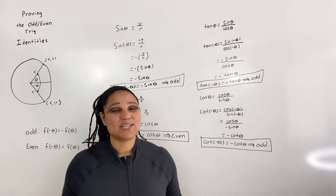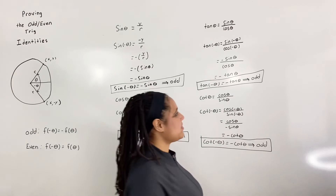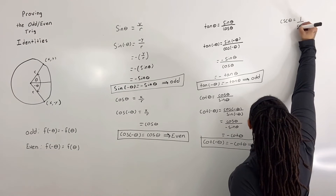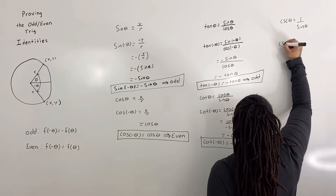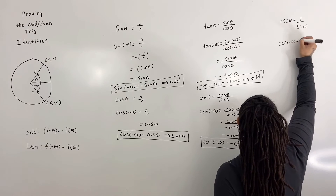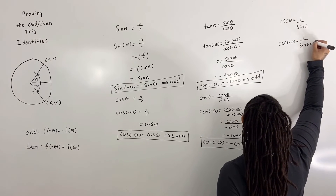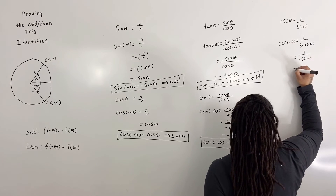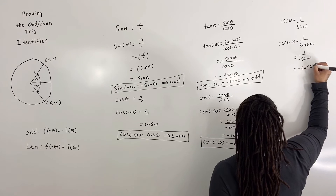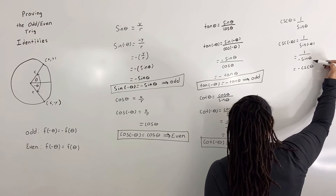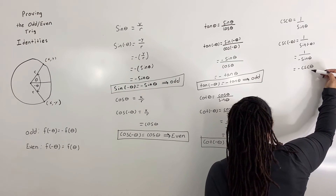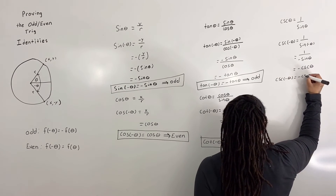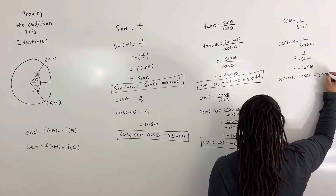Now let us prove that cosecant is an odd function. We know that csc of theta is equal to 1 over sine of theta. So csc of negative theta is equal to 1 over sine of negative theta. But that is just equal to 1 over negative sine of theta, which is equal to negative csc of theta, because 1 over sine of theta is equal to cosecant of theta by the reciprocal identity. So we have csc of negative theta is equal to negative csc of theta, which means we have an odd function.